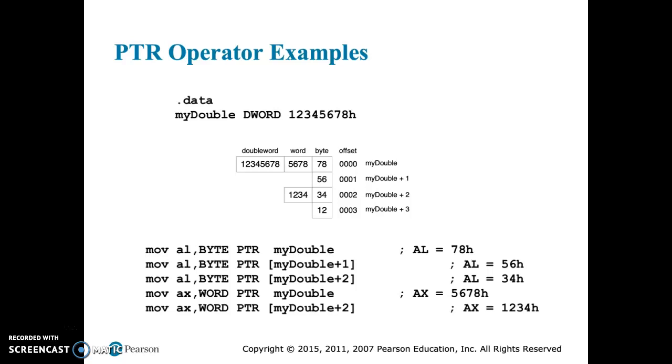And if we use WORD PTR instead of BYTE PTR, we're going to get all four of the lower digits, 5678h.